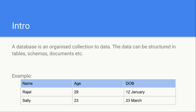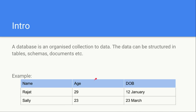Sally can design something like this, where a table stores all of the information related to her application users. She can store the name, the age of the user, and the date of birth, which would be required to calculate the notifications to be sent to users on their birthdays. Sally can store the data in a tabular form, and this is one such representation of storing data into a database.